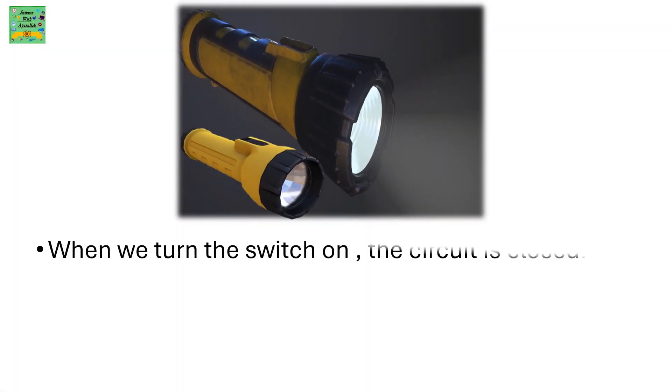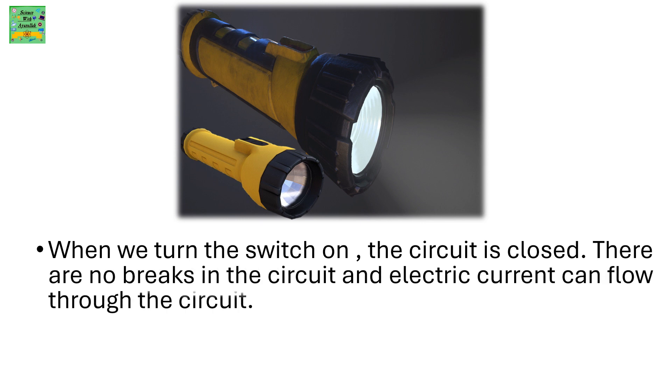When we turn the switch on, the electric circuit is closed. There are no breaks in the circuit and electric current can flow through the circuit. The lamp in the torch will light up.